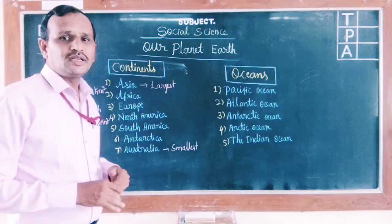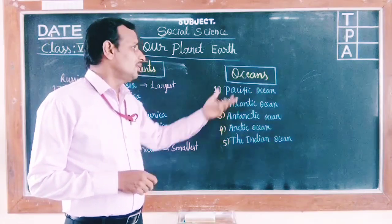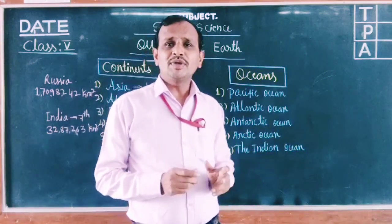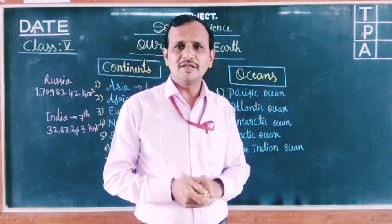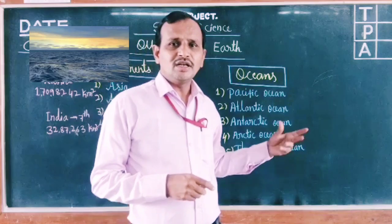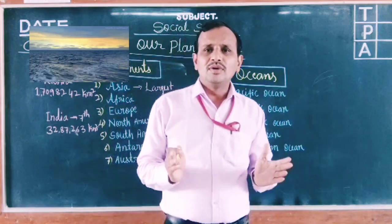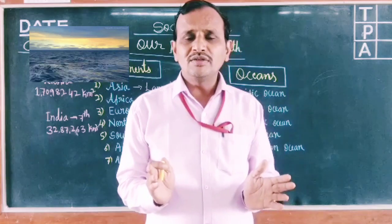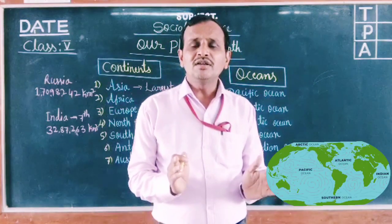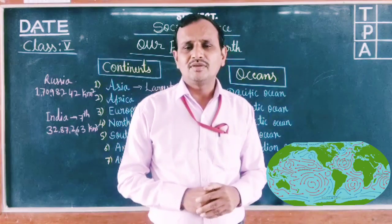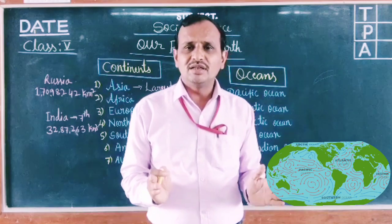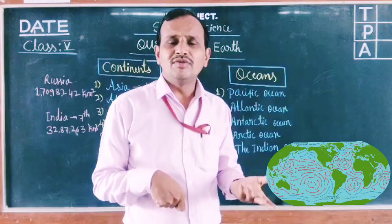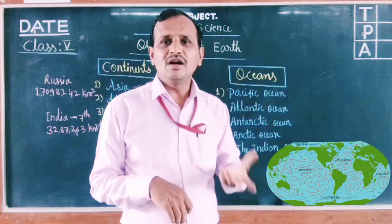Now let us understand the second topic of today's class — oceans. You already know that the Earth's surface is nearly 71% covered by oceans. An ocean is a large area of water between the land — between the continents — and which is very big in size. That is the meaning and definition of oceans.